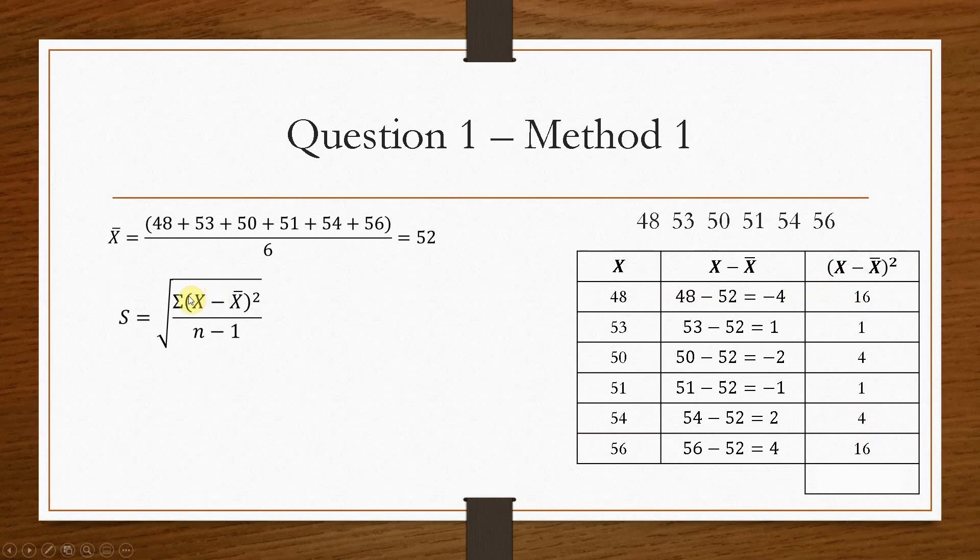Now we haven't accounted for the sigma. And that's where we have to add all of these values together. And that, 42, is the answer to this whole top of the fraction. Sigma of x minus x bar squared. So that's all of these values added together, and it'll give us 42. Now our sample size is 6, because we have 6 values here.